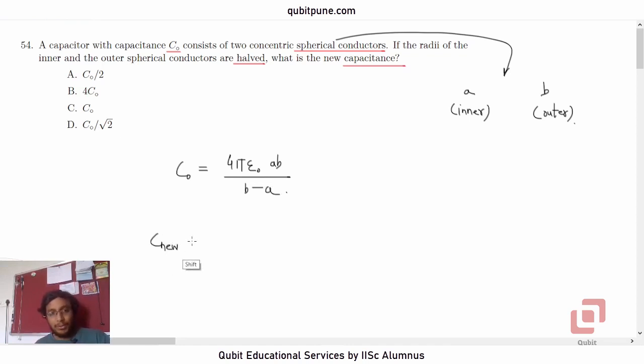Now C_new, the new capacitance. Radii are being halved. So 4πε₀ is not going to change. A by 2 into B by 2 upon B by 2 minus A by 2, that will be the new capacitance. So 4πε₀ into AB upon B minus A.